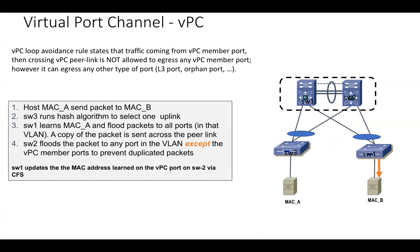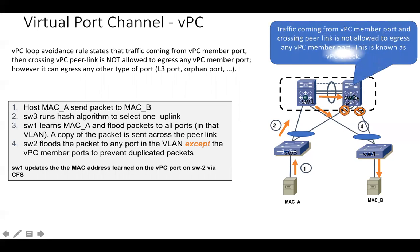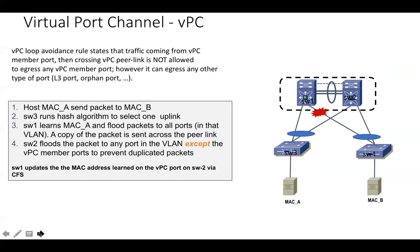Let's assume traffic is originating from System A to System B. As soon as Switch 3 receives the traffic, it will learn the MAC address and perform a local hash to choose the path — either towards Switch 1 or Switch 2. In this example, it chooses Switch 1. Switch 1 sends traffic towards Switch 2 and Switch 4. The VPC check says: if Switch 2 receives traffic on the peer link, it will not be allowed to send that traffic out of any VPC member port. This is how we avoid duplication of packets.